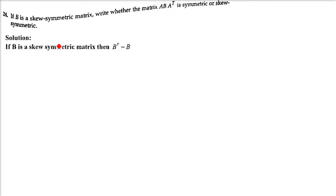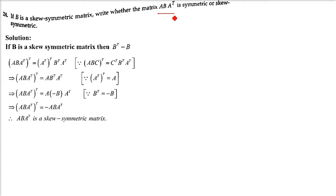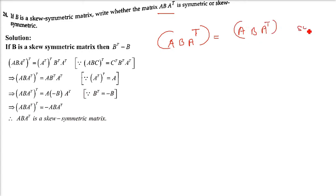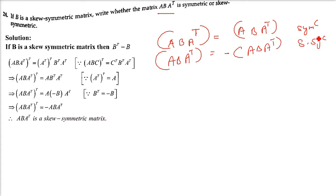Next: if B is a skew-symmetric matrix, write whether the matrix A·B·Aᵀ is symmetric or skew-symmetric. We treat A·B·Aᵀ as a single matrix and take its transpose. If (ABAᵀ)ᵀ = ABAᵀ it is symmetric; if (ABAᵀ)ᵀ = -ABAᵀ it is skew-symmetric.